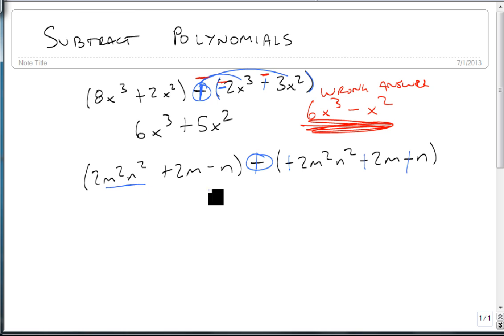Now we look for our like terms, m²n². We have a positive 2 plus a positive 2 becomes 4m²n². 2m plus 2m becomes 4m. And -n plus n adds to 0, goes away, and we're just left with this answer.